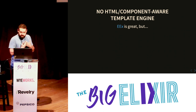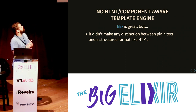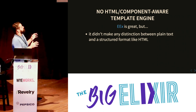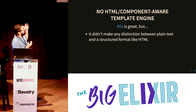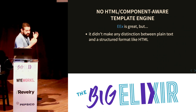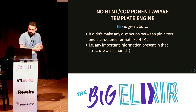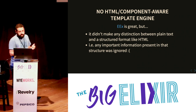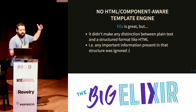The second problem was there was no HTML component-aware template engine. EEx is really great, it's really fast, but the problem is that it didn't make any distinction between plain text and a structured format like HTML. And if you're trying to create a component model, there is no way you can get around that without having a language that can actually understand the structure of the HTML. So with EEx, any important information in the HTML structure was completely ignored, making it really easy to create invalid HTML.